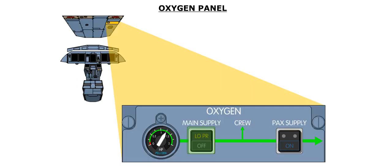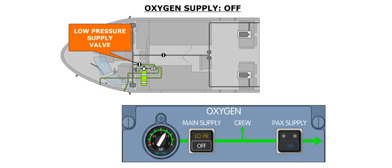The flow of oxygen to the flight crew and passengers is controlled by the oxygen panel, located on the flight deck overhead. The low pressure supply valve is controlled by the main supply push button. When this push button is in, low pressure oxygen is available to the flight crew masks and the passenger supply valve. When the main supply push button is released out, the main supply valve closes and the off light illuminates white.